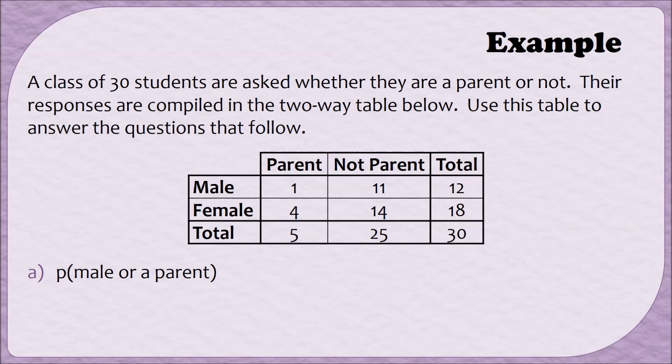In the previous video we looked at this example. A class of 30 students was asked whether they were a parent or not and the results were compiled in the two-way table below. The first part of this example was to determine the probability that a person is either a male or a parent or both. We found this probability by adding together those who were males but not parents, those who were parents but not males, and those who overlapped in those two categories. We found a numerator of 1 plus 11 plus 4 and we divided by the total number of people which was 30. This gave us a probability of 16 thirtieths or 0.53. This is just one way that we could have found this probability.